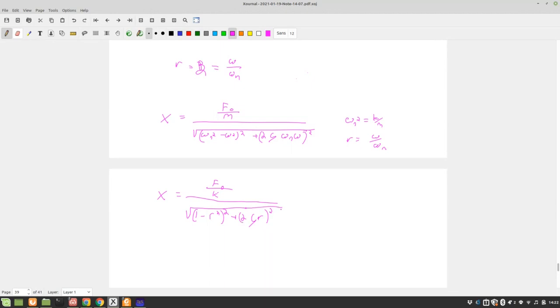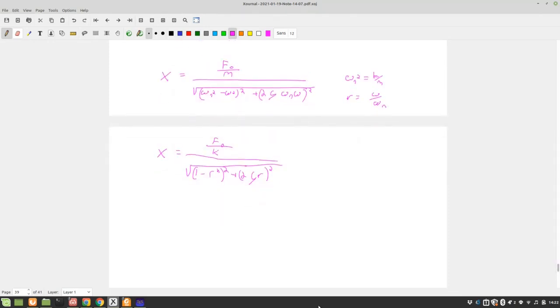F_0/k over X, I'm going to just skip over the intermediate step, F_0/k over the square root of (1 - r²)² + (2ζr)². So this becomes the terminology that we commonly use it as, which is X for a given stiffness k, or f_0, which is equal to X times ω_n² over little f_0.